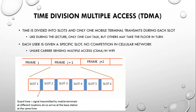Time division multiple access (TDMA) divides time into slots, and only one mobile terminal transmits during each slot — similar to a lecture where only one person speaks at a time. Each user is given a specific slot with no competition, unlike carrier sense multiple access used in Wi-Fi.